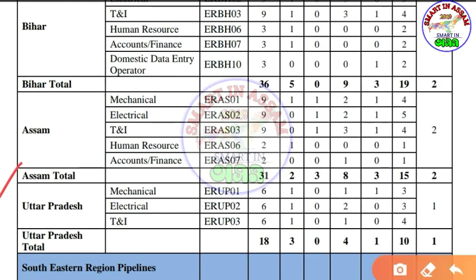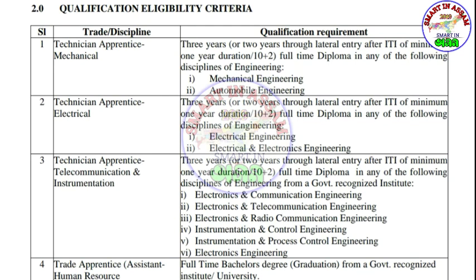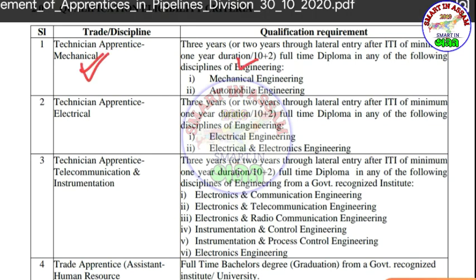For the engineering category, applicants need to study Global Engineering. Technician Apprentices may apply in classical engineering and vehicle or Technological Engineering. Technician Apprentices in Telecommunication and Instrumentation — including Electronics and Radio Communication Engineering, Instrumentation Control Engineering, Instrumentation Process Control Engineering, and Electronics Engineering — are also eligible.